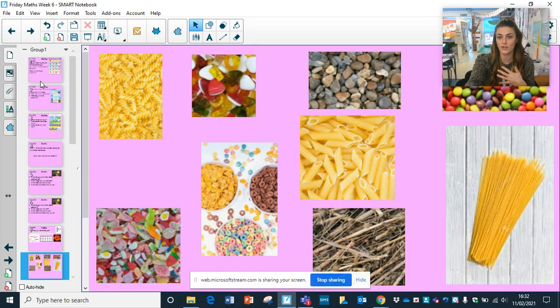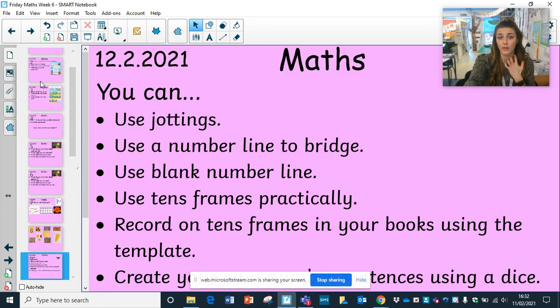And we did share that if you don't have those resources at home, you can use your own objects around the house. These are the objects you can use: jottings, number lines. Number lines is the main one we've been looking at and we've been getting really good at.